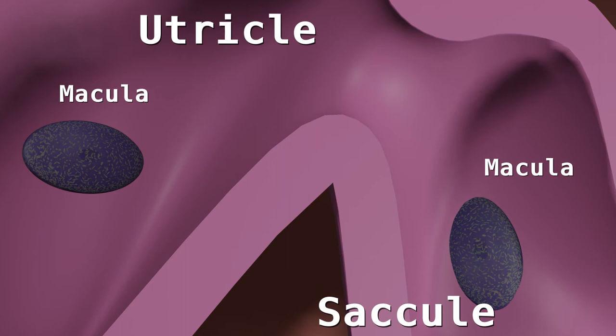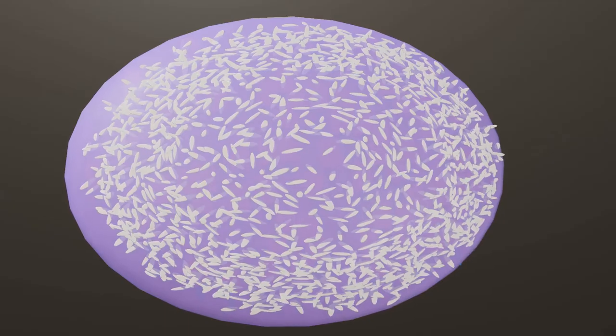The utricle macula senses linear acceleration in a forward and backward plane. The saccule macula senses linear acceleration in the up and down direction.